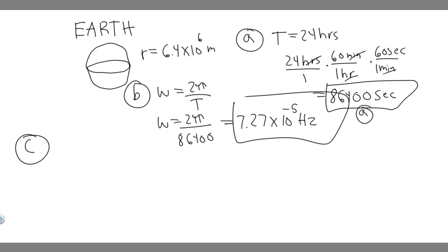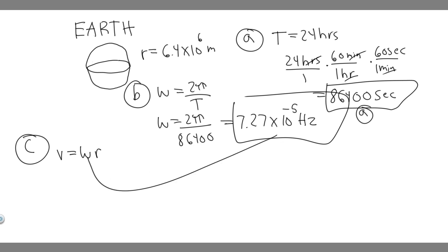Now let's move on to C. For C, it says given that the earth has a radius of 6.4 times 10 to the 6 meters, what is the linear velocity at the earth's surface? In order to solve this, you need to know this formula: the velocity is equal to omega times the radius. You can find the linear velocity if you have the angular velocity and then multiply it by the radius. We solved for the angular velocity in the last problem, and you're given the radius, so all we have to do is plug them in.